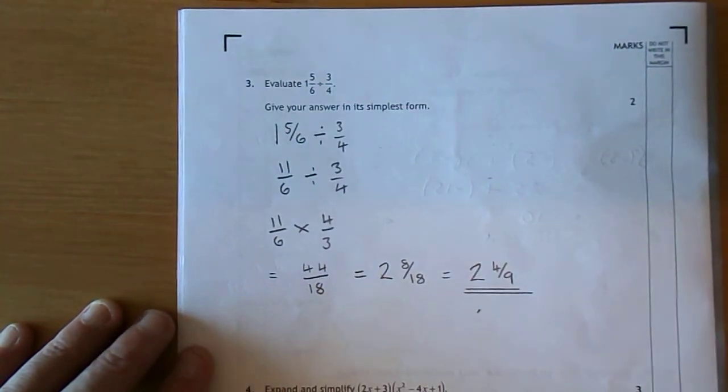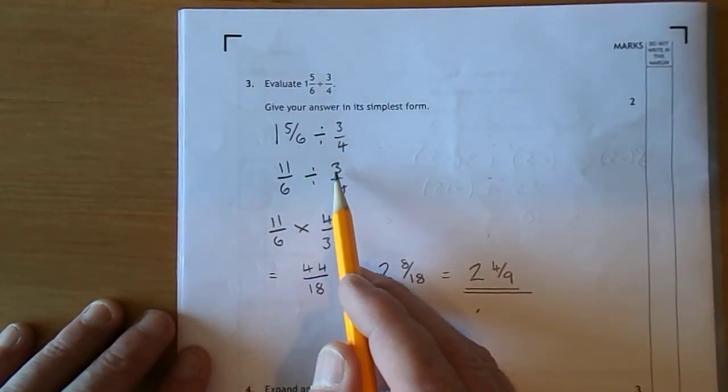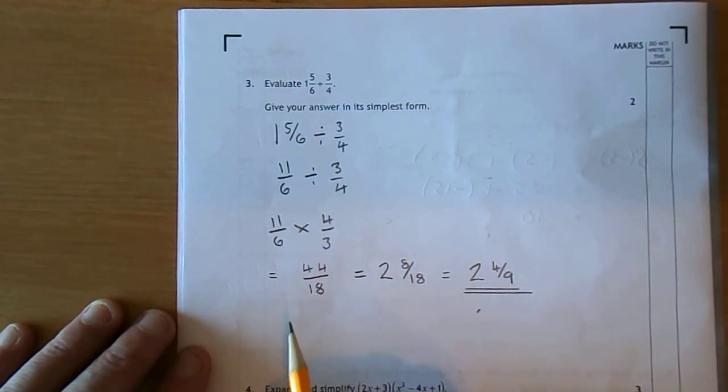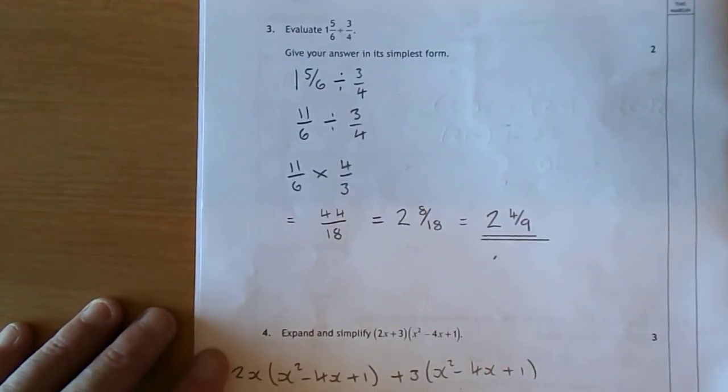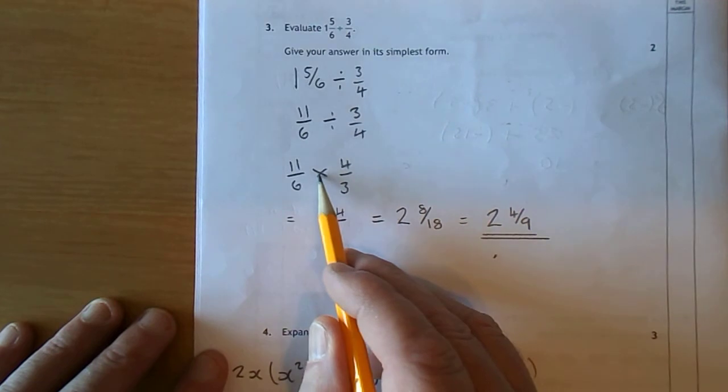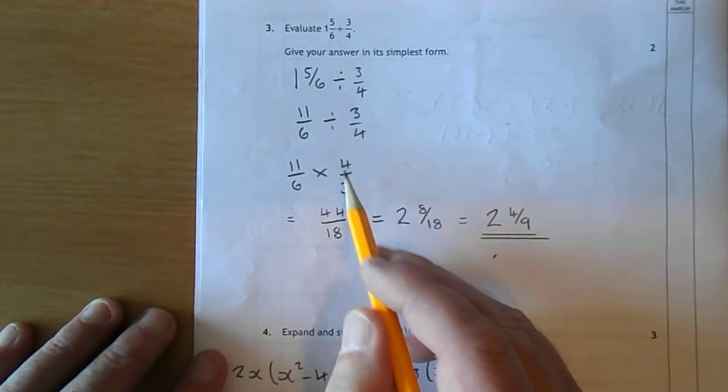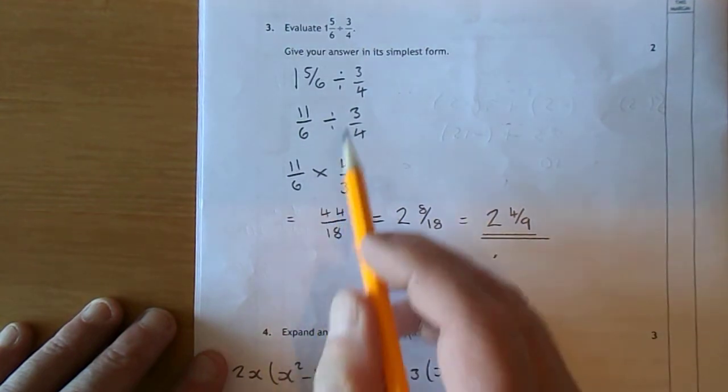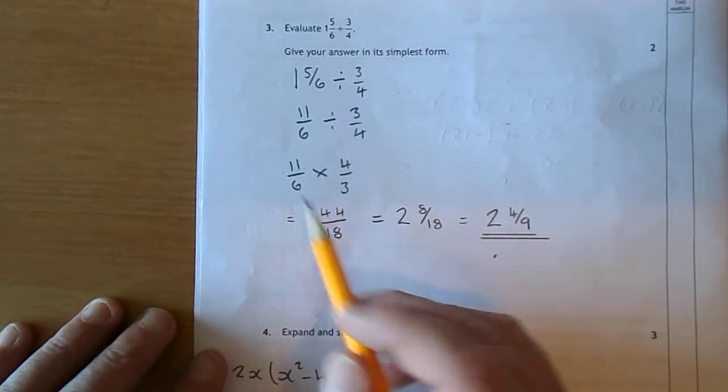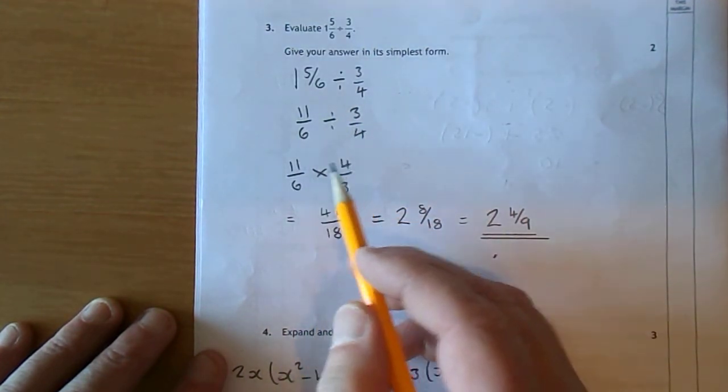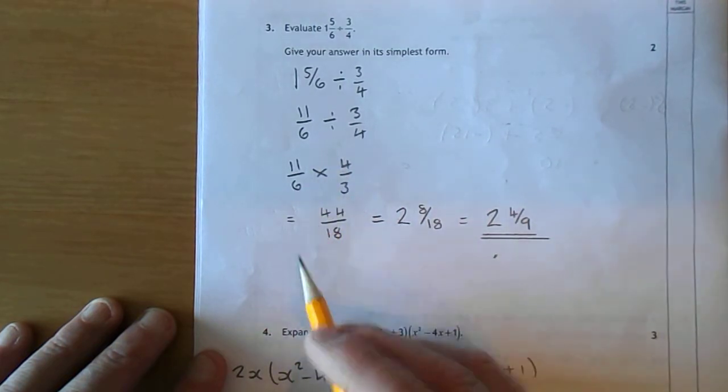So 1 and 5 sixths is 11 sixths and that's to be divided by 3 quarters. The easy way to do that is to change the sum to a multiplication and flip the 3 quarters round, only the 3 quarters round to be 4 over 3. These two sums have got the correct same answer, but that one is easier to do.